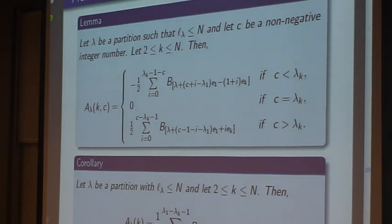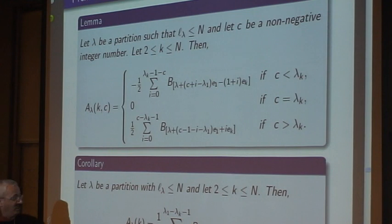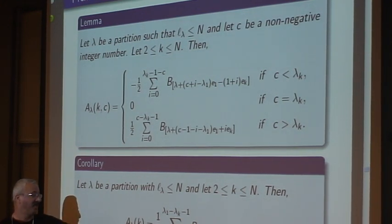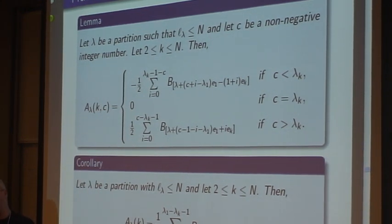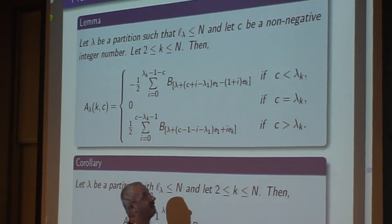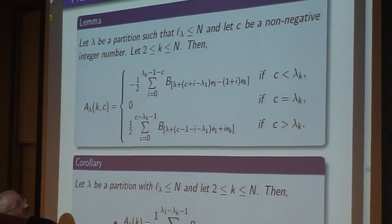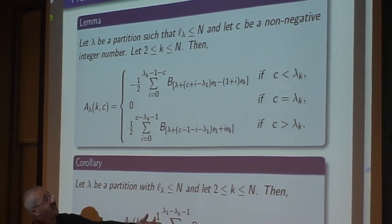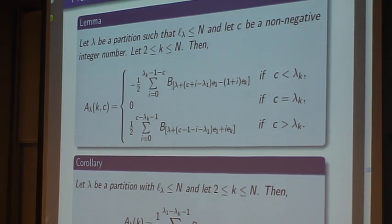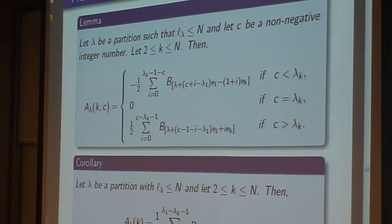Here is the corollary. Let us say I want A_λ(k), which means I put instead c, λ_1. So if c is λ_1, because it's a partition, we are either here or here. If we are in the last case, it matches. If we are in the middle case, also it matches because it's zero. So this is the corollary that matches an integral of type A to sum of integrals of type B.